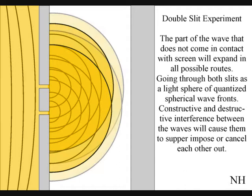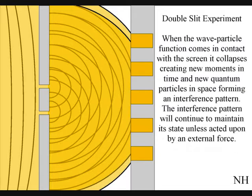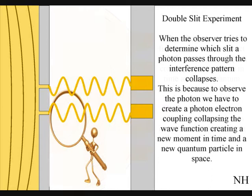When the waves come in contact with the screen, they will collapse, creating moments in time and quantum particles in the shape of an interference pattern. When the observer turns on a detector to determine which slit a photon passes through, the interference pattern collapses.